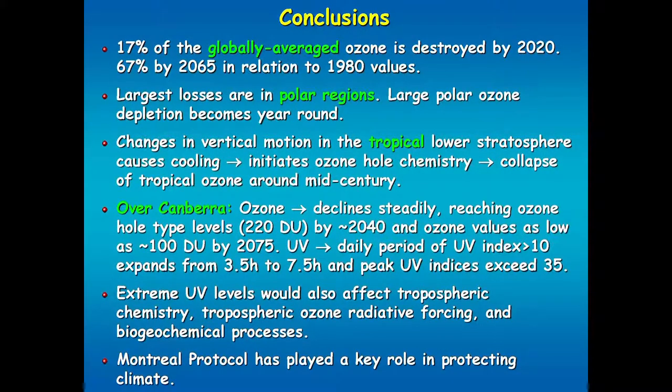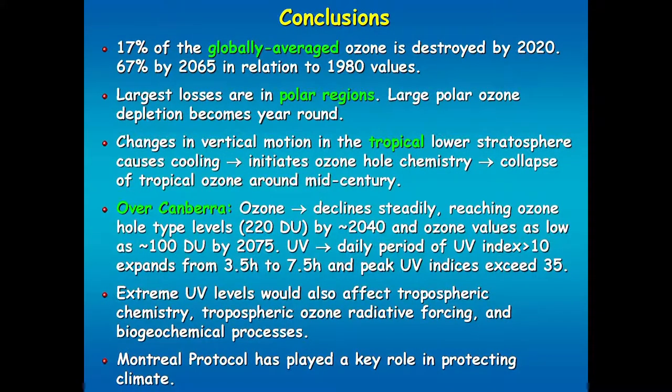Over Canberra, ozone declines steadily, reaching ozone hole-type values of 220 Dobson units by 2040, and as low as 100 Dobson units by 2075. For UV, the period during the day when the UV index exceeds 10 expands from 3.5 hours to 7.5 hours over the course of the century, with peak UV indices of 35. One thing not explored is that with that much UV now reaching the troposphere, it would have a big effect on tropospheric chemistry — and no one has really had a good look at that. Finally, the Montreal Protocol has played a key role in protecting climate, and that climate impact is probably why things would not have got this bad in terms of ozone and UV. Thank you very much.